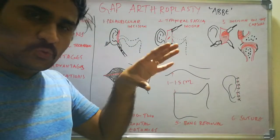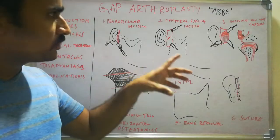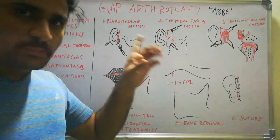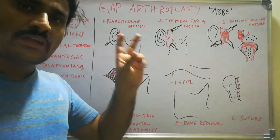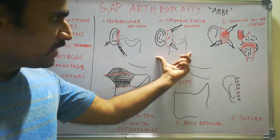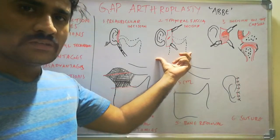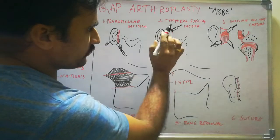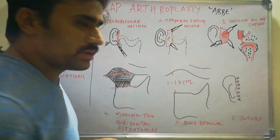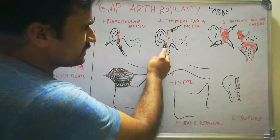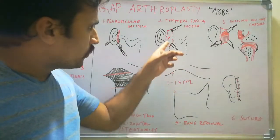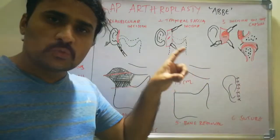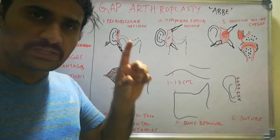After taking the incision, dissect through the skin and subcutaneous tissue down to the temporoparietal fascia, also called the temporalis fascia. The temporalis fascia has a superficial layer and a deep layer. In the diagram, we have dissected down to the temporalis fascia — shown as the whitish layer — and the red lines demarcate the flap margins. The middle red line is the incision through the superficial layer of the temporalis fascia.